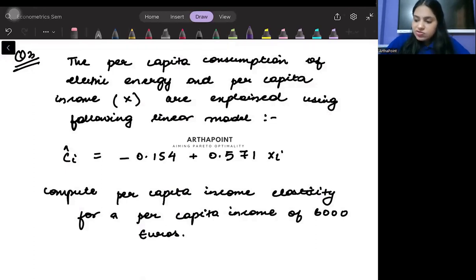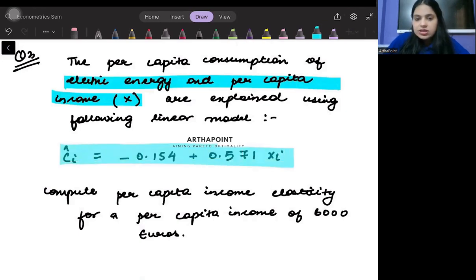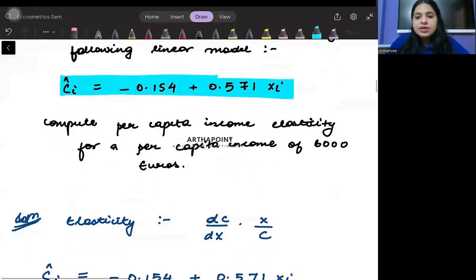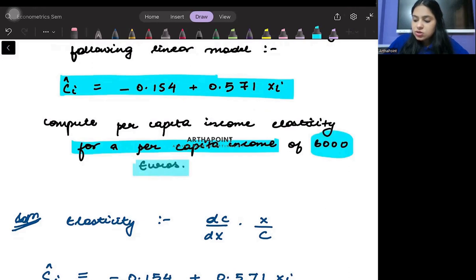The per capita consumption of electric energy and per capita income are explained using this. It says compute the per capita income elasticity for a per capita income of 6,000 euros.